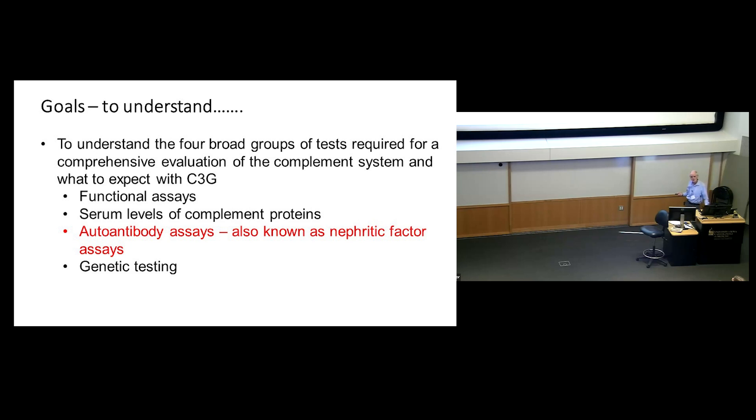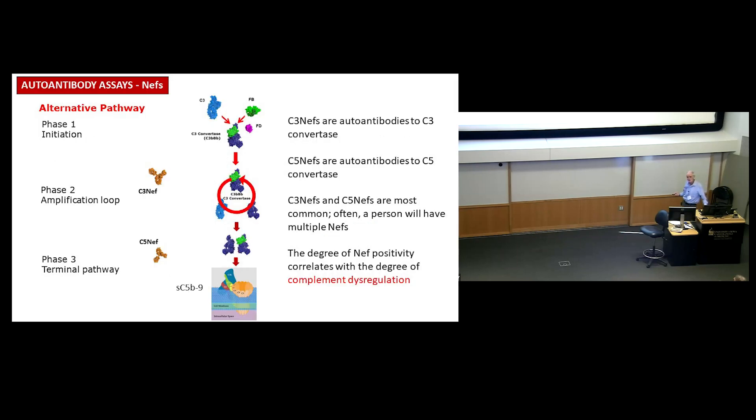The next thing we do are the autoantibody assays. Some of you have nephritic factors, and we look for nephritic factors in all of you. Nephritic factors are antibodies. Antibodies are generally good—if you get a flu shot, that's to develop antibodies so you don't get the flu. Some antibodies turn traitor. What we have here is a C3 nephritic factor, and it binds to C3 convertase. In binding to C3 convertase, C3 convertase stays extra active, and the normal control of complement is lost.